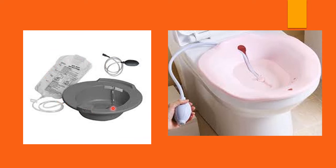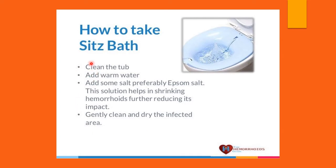Commercially prepared sitz bath equipment is also available, with a basin that fits into the toilet bowl so you can sit comfortably. Normal saline can be used to flush the operated area or thrombosed piles, which cleanses and reduces edema and pain. To summarize the sitz bath procedure: clean the tub, add warm water, add Epsom salt to help shrink the hemorrhoids further, and afterward gently clean and dry the area.